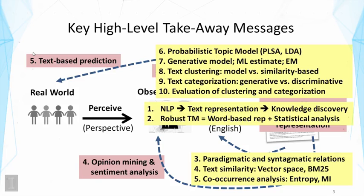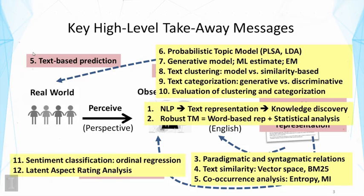Then we talked about sentiment analysis and opinion mining, where we introduced the sentiment classification problem. Although it's a special case of text categorization, we talked about how to extend or improve text categorization by using more sophisticated features needed for sentiment analysis. We did a review of commonly used complex features for text analysis, and also talked about how to capture the order of sentiment categories — in particular we introduced ordinal logistic regression.